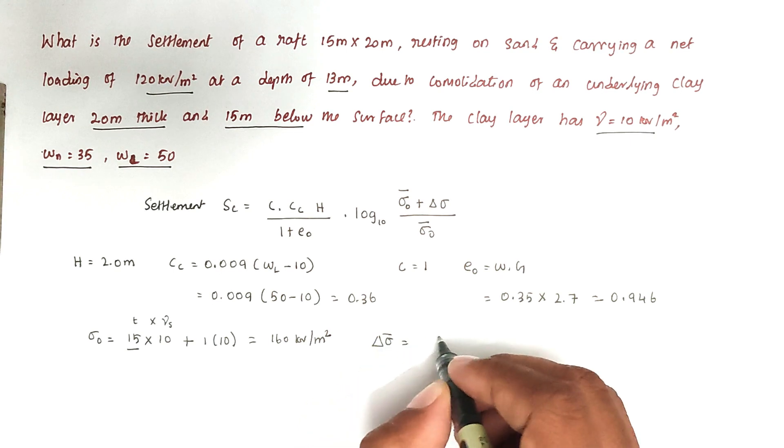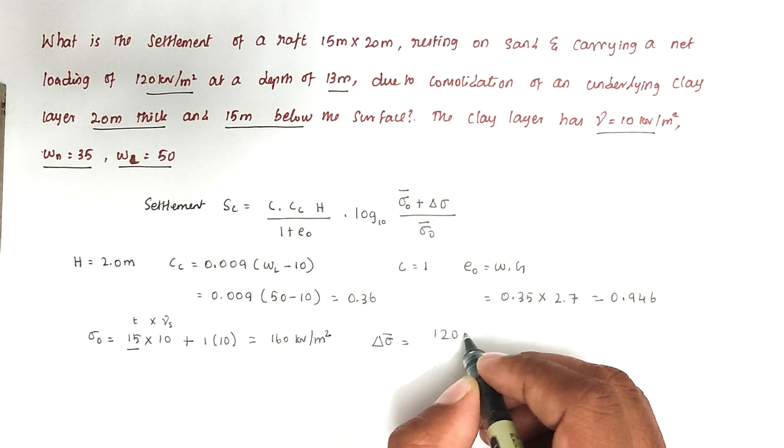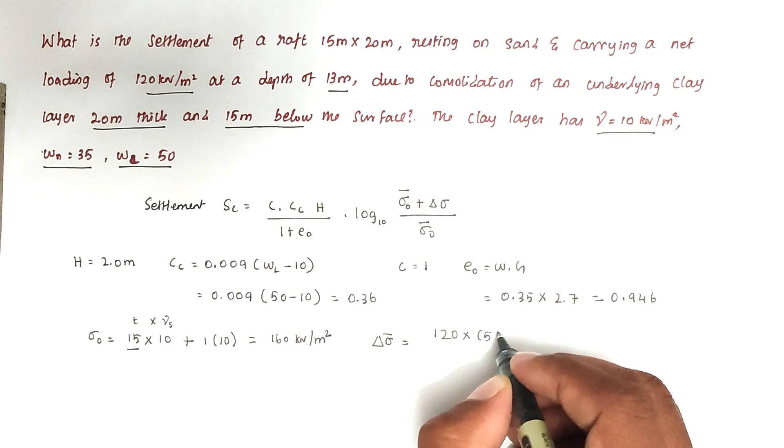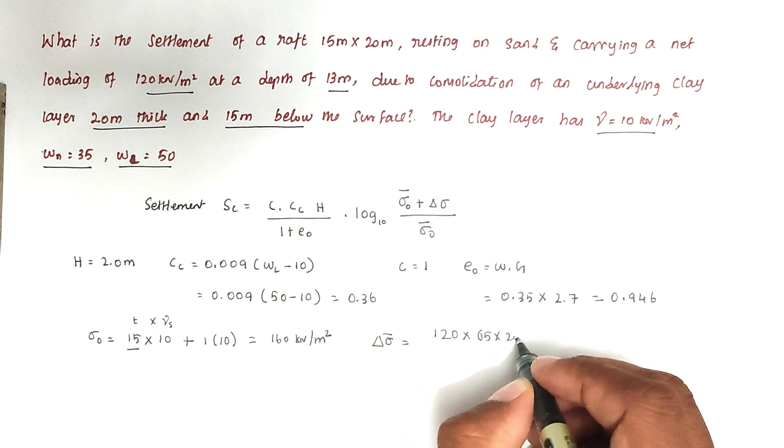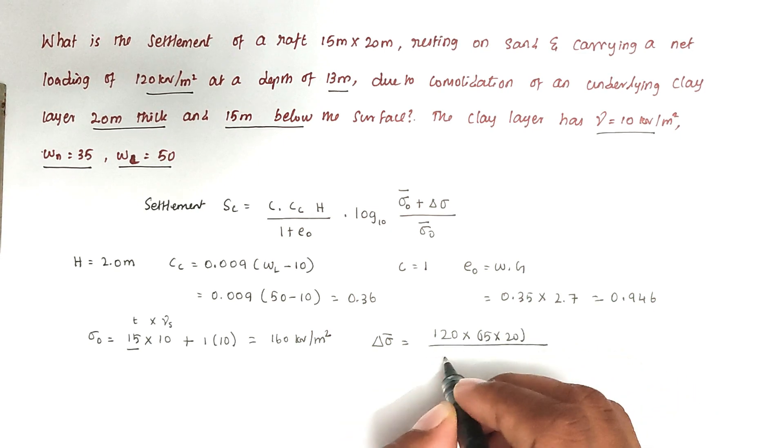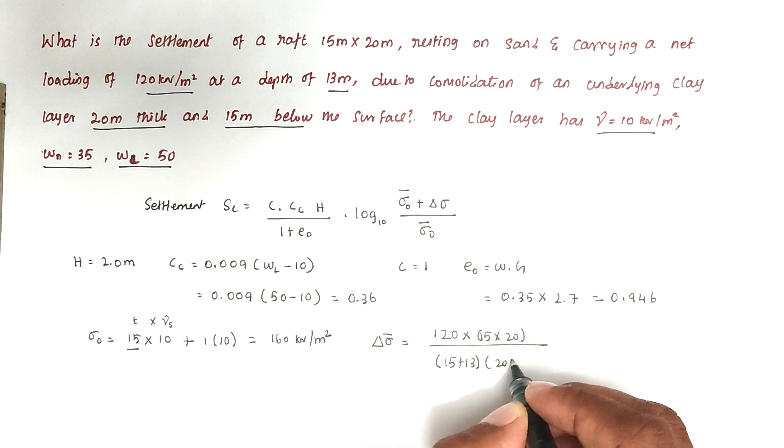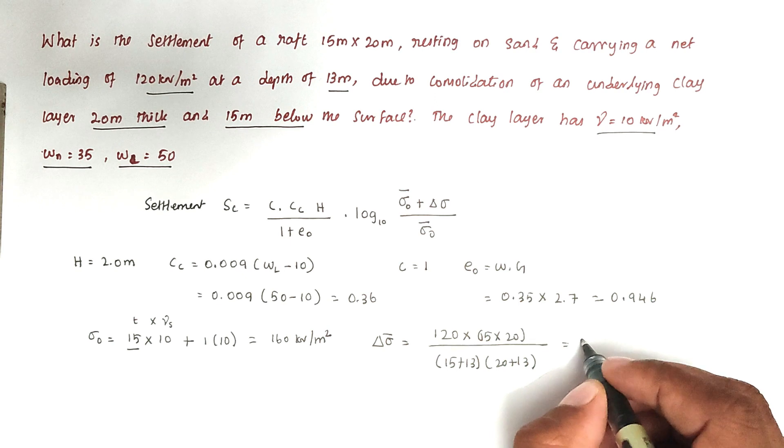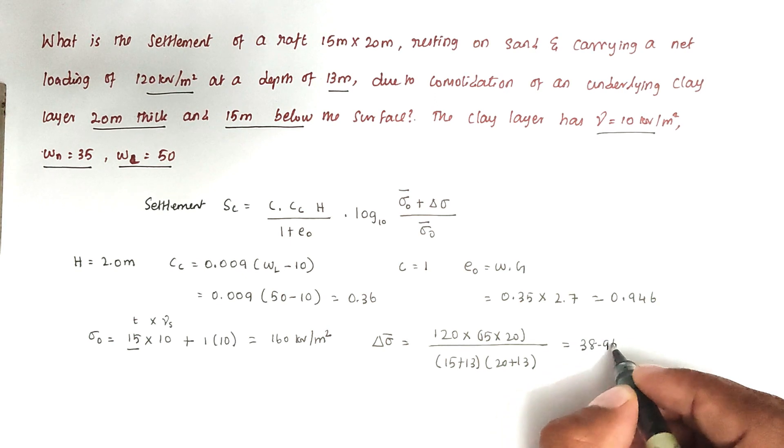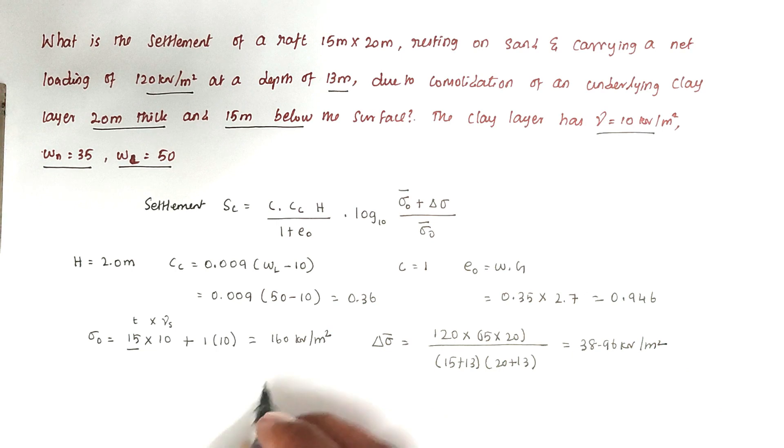Now we have to find out del sigma. Del sigma equals 120 times 15 times 20 divided by the total depth: 15 plus 13, times 20 plus 13. Solving this, we got the value of 38.96 kilonewton per meter square.